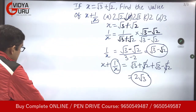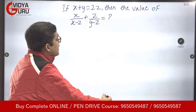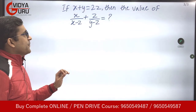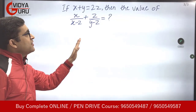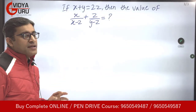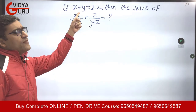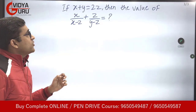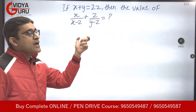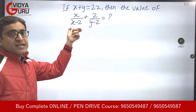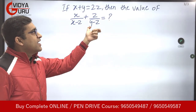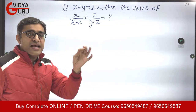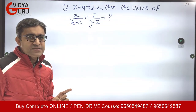Now let's look at the next question. We have to find out the value of this expression: x/(x − z) + z/(y − z), where x + y = 2z. We do not have expressions like x − z and y − z directly, so we will have to derive these expressions involving the negative sign.